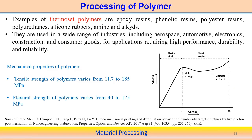Examples of thermoset polymers include epoxy resins, phenolic resins, polyester resins, polyurethanes, and silicone rubbers. These thermoset plastics are used in daily applications across aerospace, automobile, electronics, and consumer goods industries, particularly for high-performance applications where high durability and reliability are required.